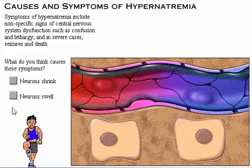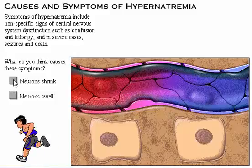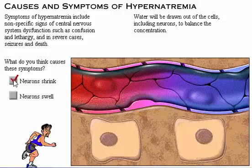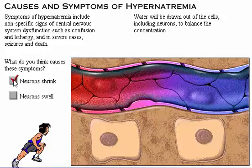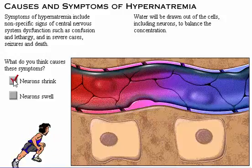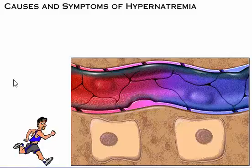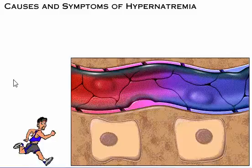What do you think causes these symptoms? Because the osmolarity of the extracellular fluid is higher than that of the intracellular fluid, water will be drawn out of cells, including neurons, to balance the concentration. From your knowledge of water homeostasis, see if you can determine what symptoms the runner will exhibit.